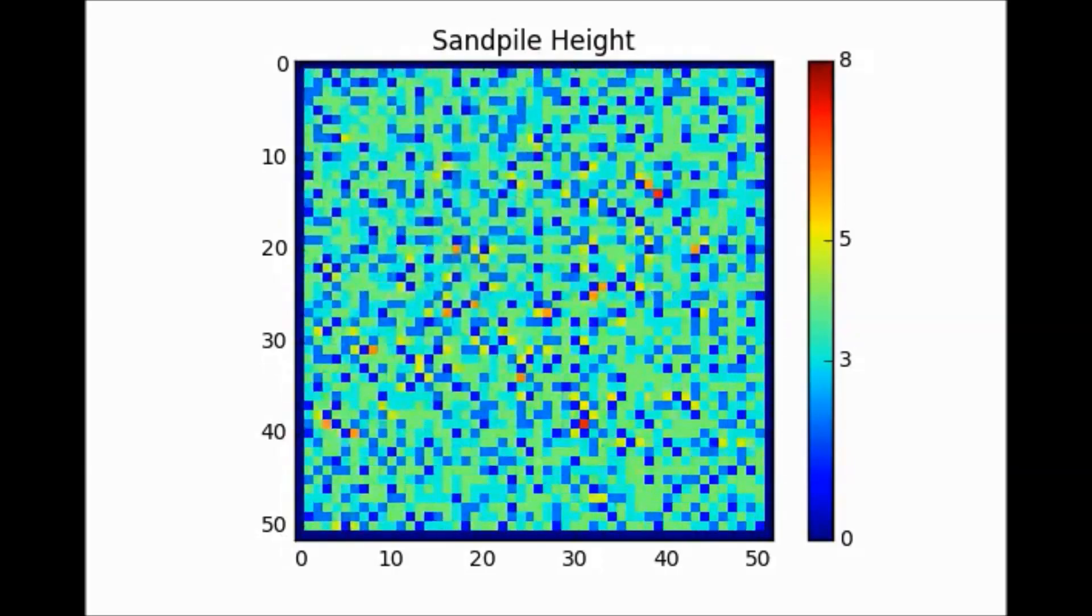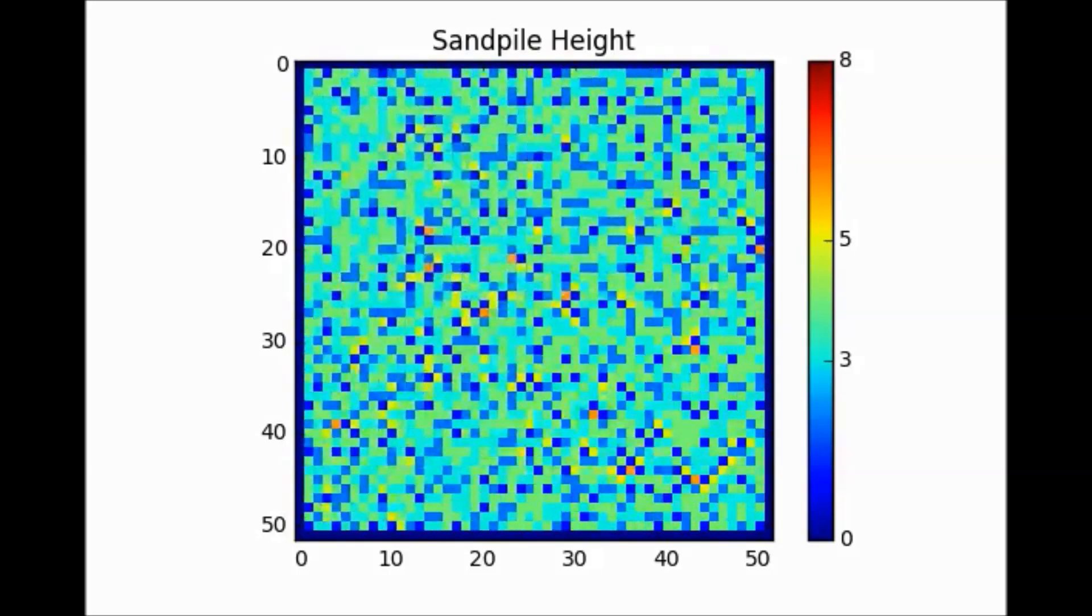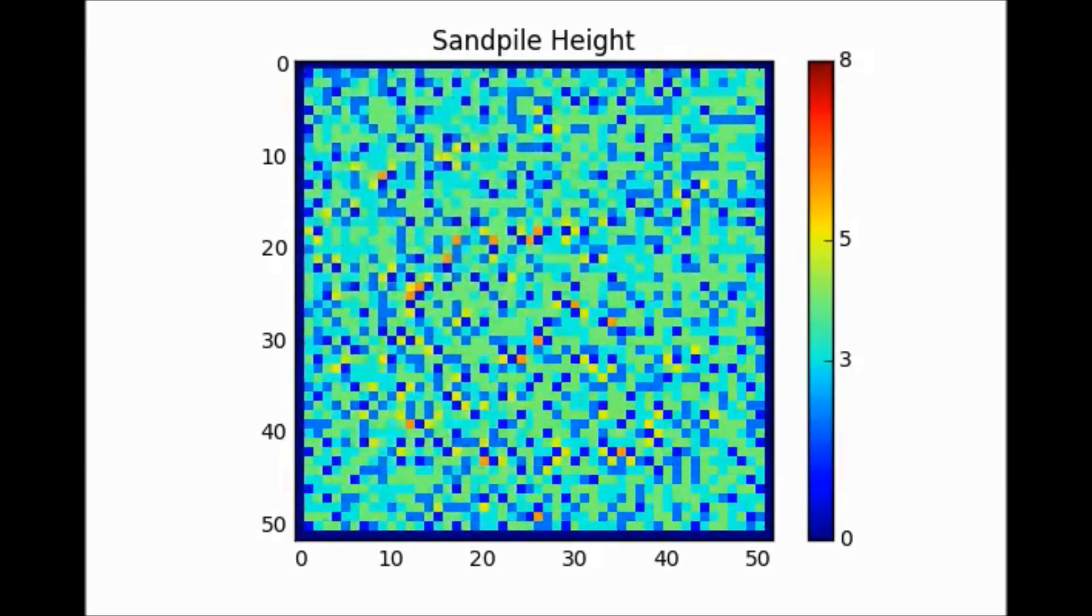Occasionally, the additional grain just stays where it fell, and no avalanche is produced. This system has, in some sense, infinite susceptibility. It reacts in a highly non-linear way to small perturbations.